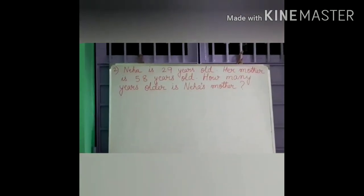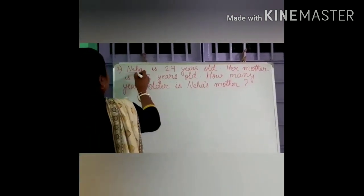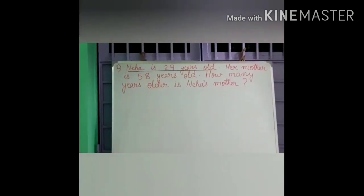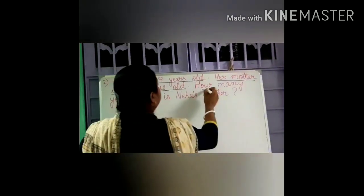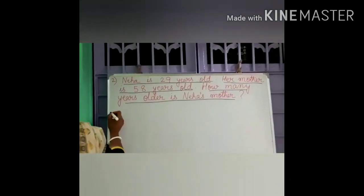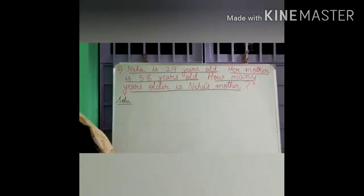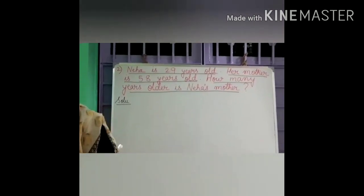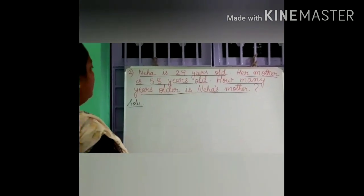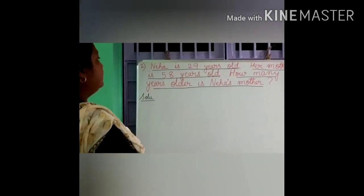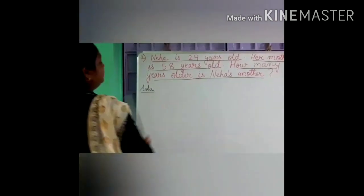Now let us first mark the important information. Neha is 29 years old. Her mother is 58 years old. And what is asked: how many years older is Neha's mother? So we will write the solution. Here age is given, so we will write age of Neha and age of her mother. We will write the mother's age first — that is 58. And the next is Neha's age, that is 29.